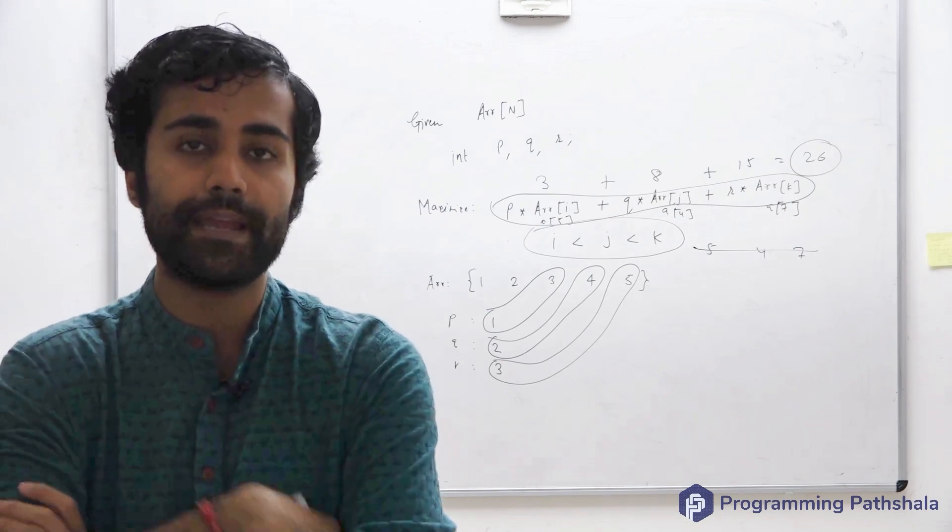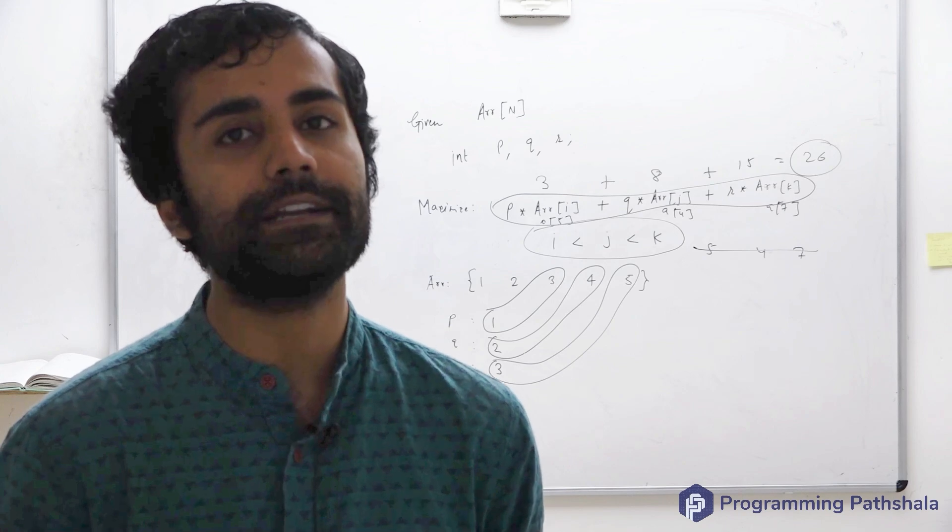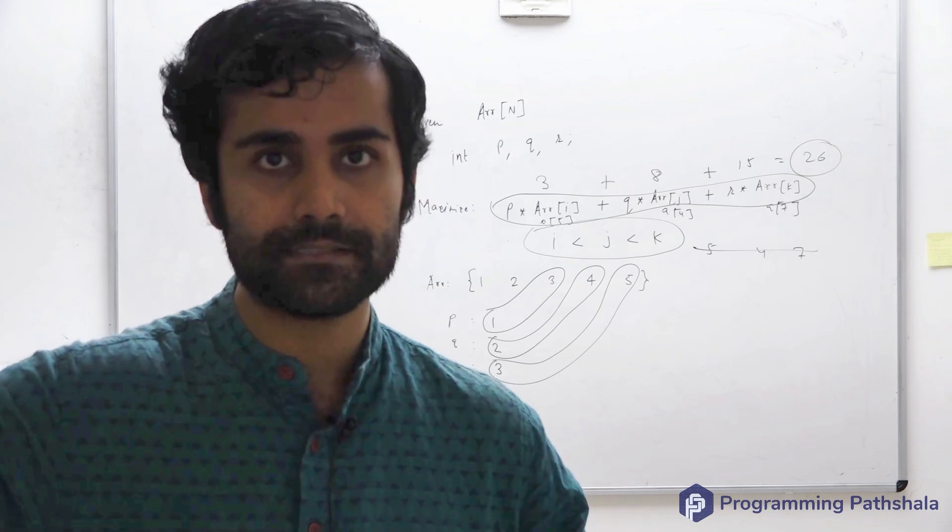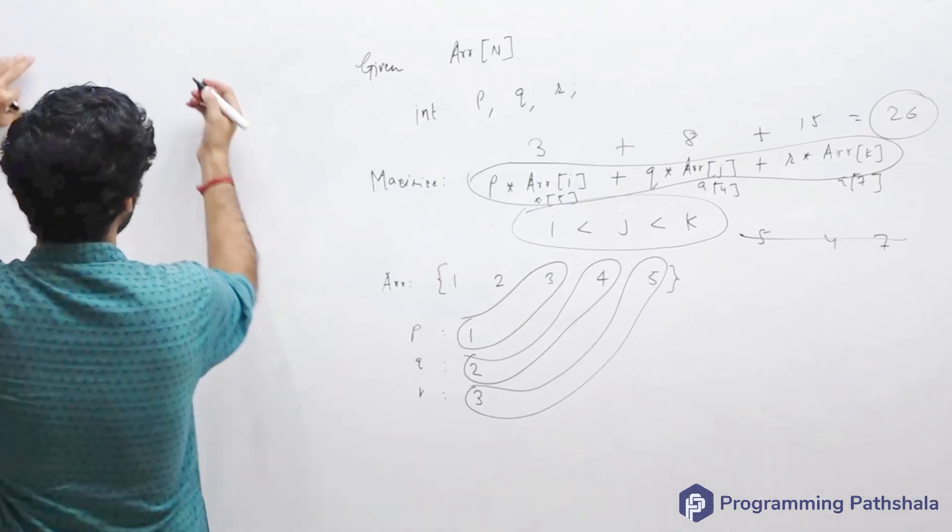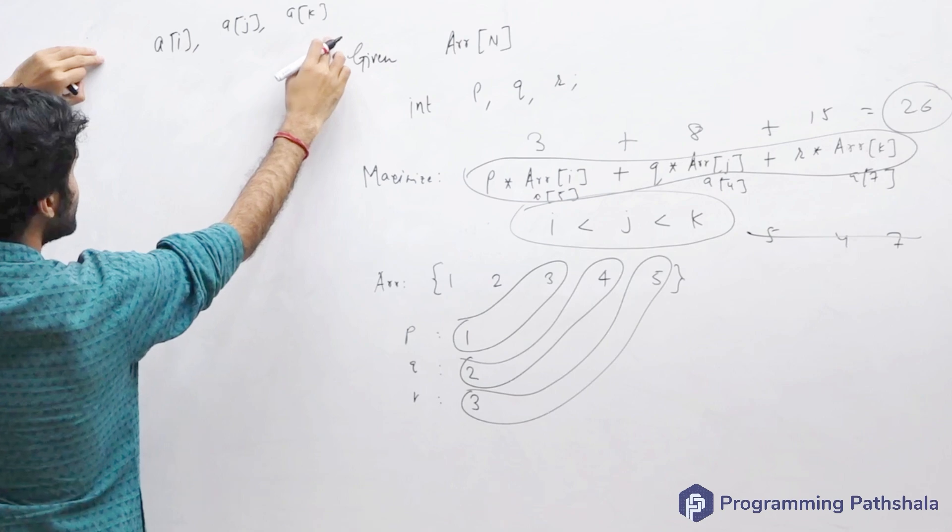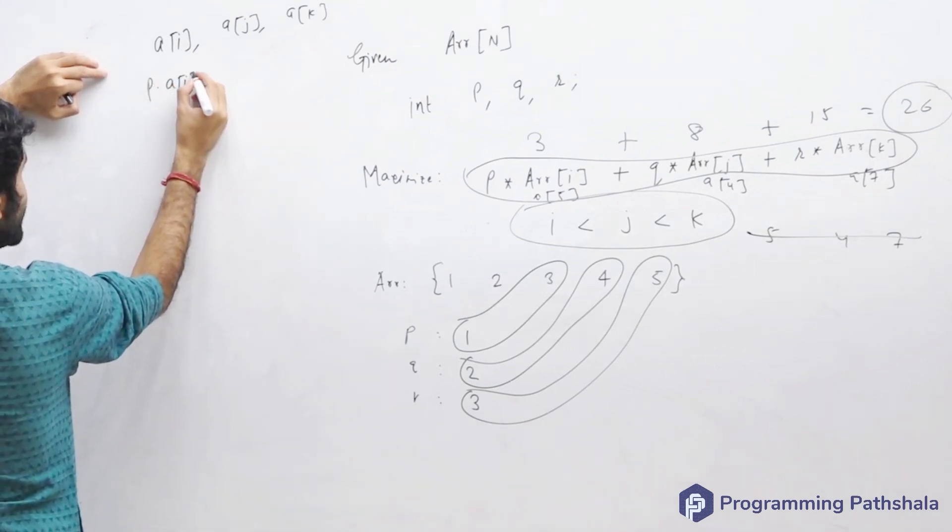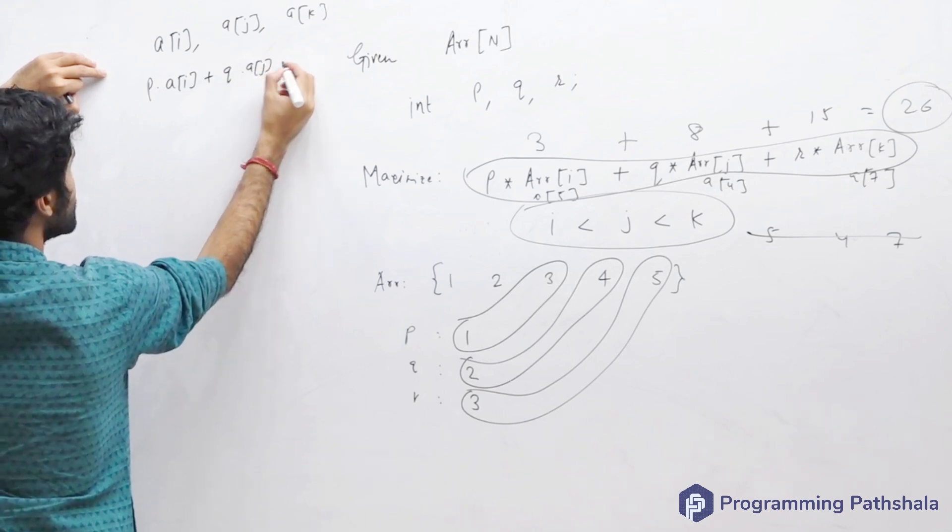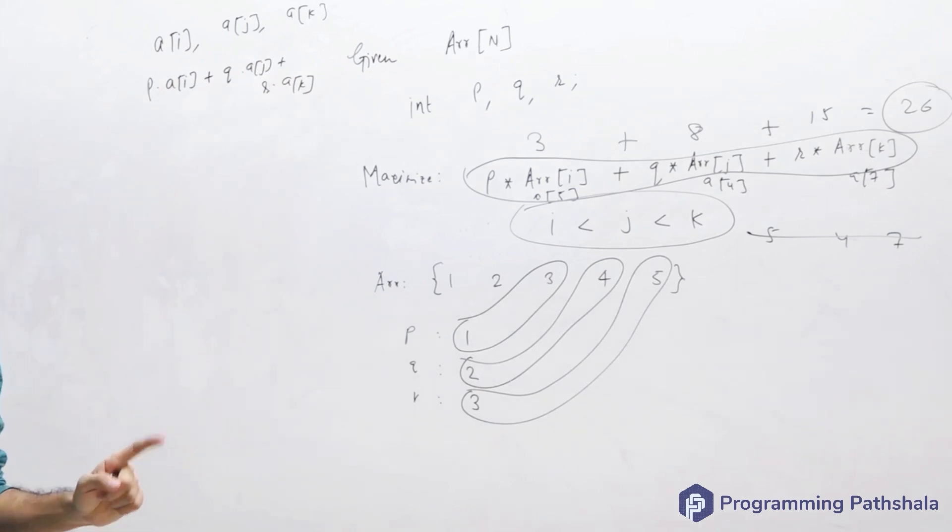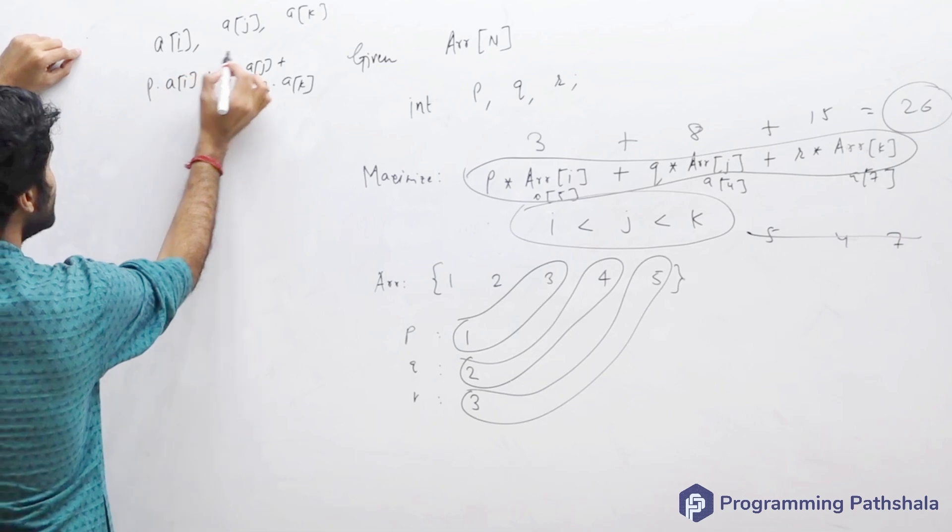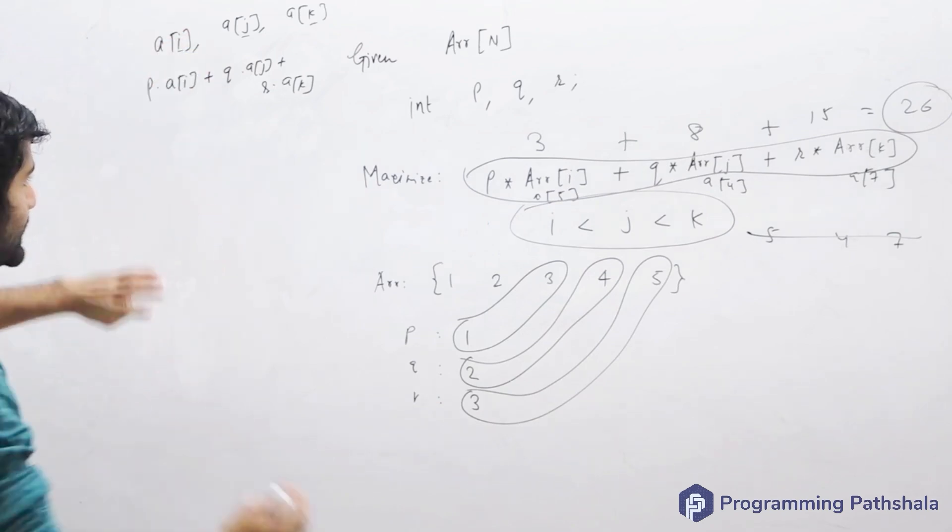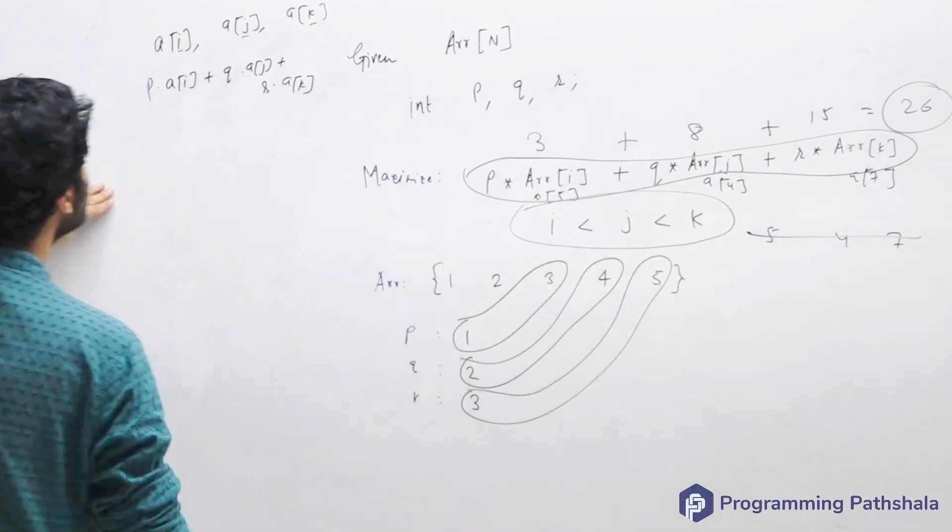Three nested loops - can I simply get it done through three nested loops? I can do it, right? I can consider all the triplets in my array ai, aj, ak. Consider all such triplets, and for all such triplets you calculate the value of p times ai plus q times aj plus r times ak. Whatever would be the maximum of these would be your answer. But one thing you have to be careful about while implementing is that i, j, and k must follow this pattern.